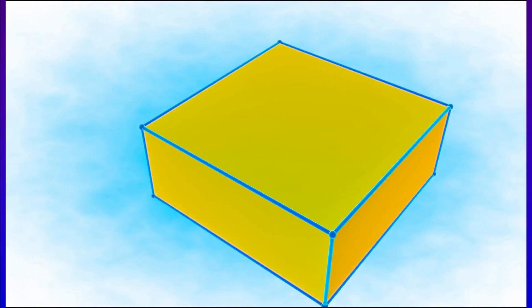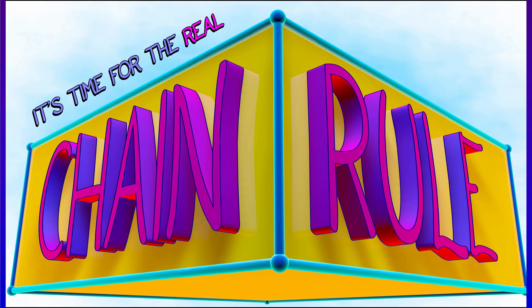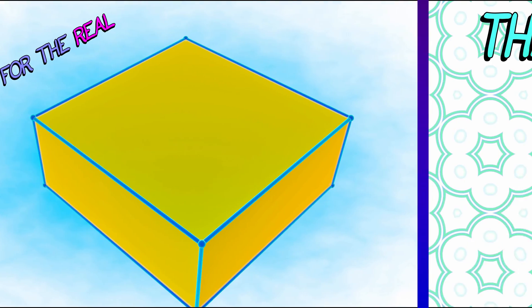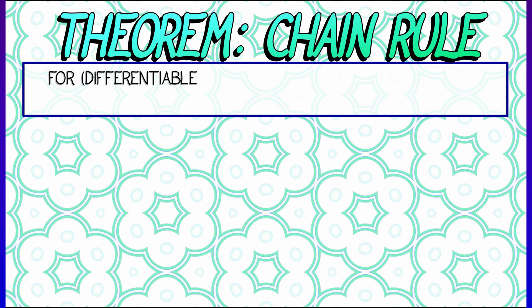I bet it's time for the real chain rule, the full multivariable chain rule. Let's go. Let's say that we have two functions f and g, but now they have multiple inputs, multiple outputs.